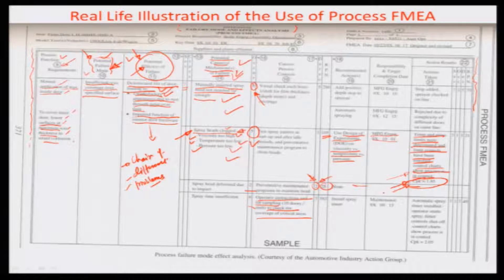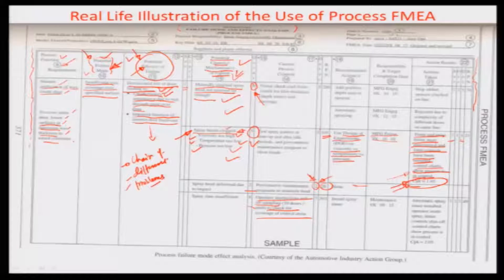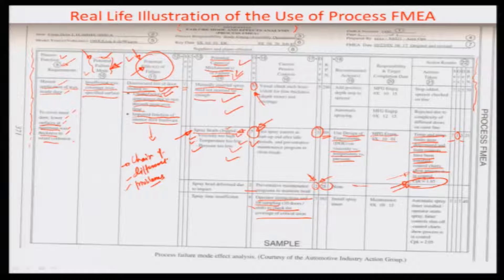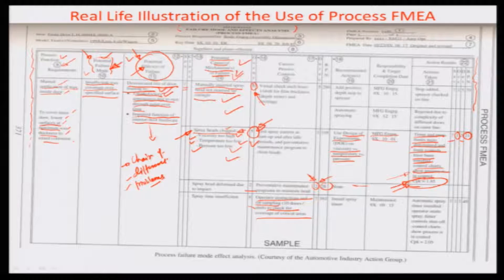Looking at the RPN after implementing this countermeasure: the severity and detectability do not change, since the spray pattern test and preventive maintenance schedules remain the same. However, the occurrence reduced from 50 percent earlier down to about 10 percent. As a result, the RPN came down from 105 to 21. So the first problem saw RPN reduced from 280 to 70, and the second from 105 to 21.